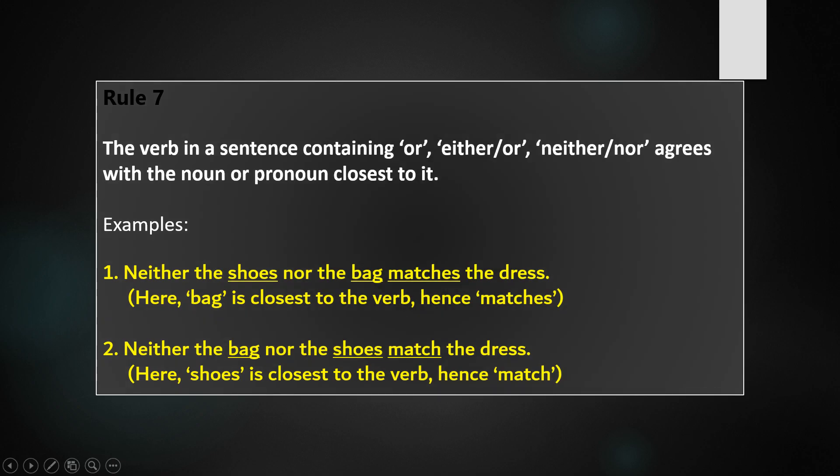Rule 7: The verb in a sentence containing or, either/or, neither/nor agrees with the noun or pronoun closest to it. For example: Neither the shoes nor the bag matches the dress — bag is closest to the verb, and since bag is a singular subject, it takes a singular verb, matches. Neither the bag nor the shoes match the dress — shoes is closest to the verb, and as shoes is a plural subject, it takes the plural verb, match.